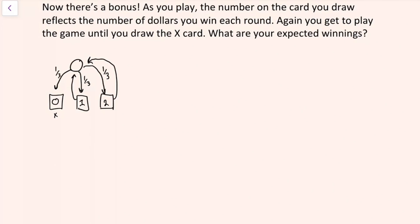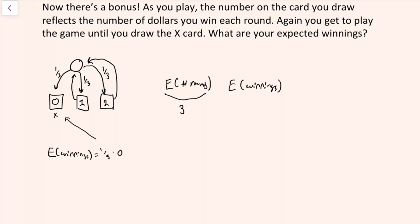There are a few different ways to solve this problem. The quickest and most efficient is simply taking the expected number of rounds and multiplying it by the expected winnings on each round. The expected number of rounds is three, from the earlier problem. The expected winnings per round is one-third times zero, plus one-third times one, plus one-third times two, which works out to one — that's three over three. So three rounds times one dollar per round gives three dollars in expected winnings overall.